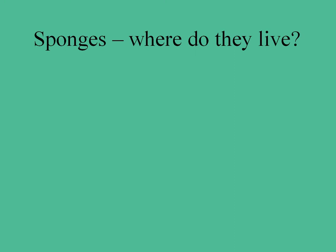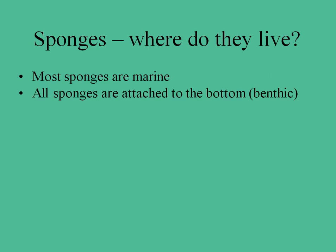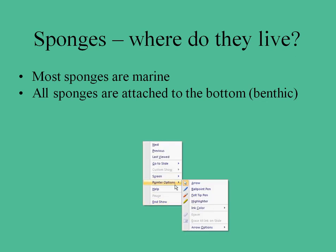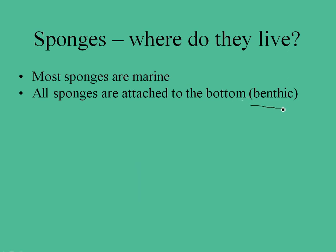So where do we find sponges? We find them mostly in marine environments. There are some in freshwater, but they tend to be very small, little encrusting sponges — mostly marine. All sponges are attached to the bottom, so they are benthic. Benthic is a term you'll see quite a bit in this course — it means associated with the bottom, underneath the water column. Things can live in the benthos, but all sponges are attached. No planktonic sponges, no free-floating sponges.